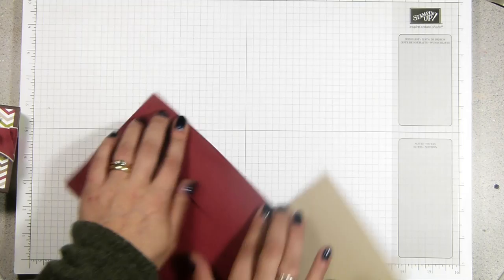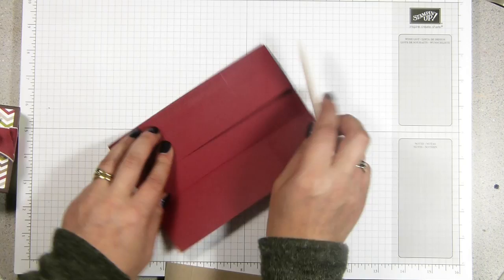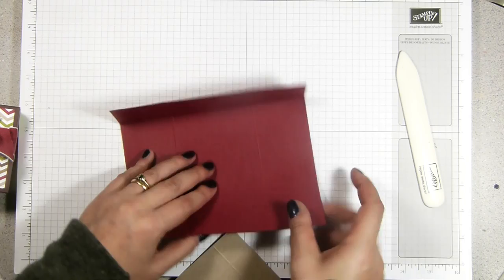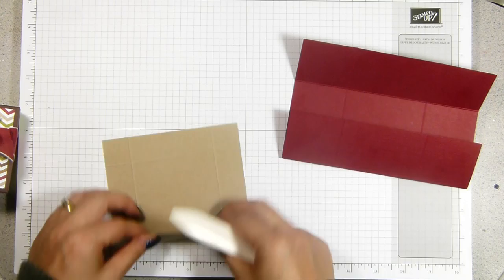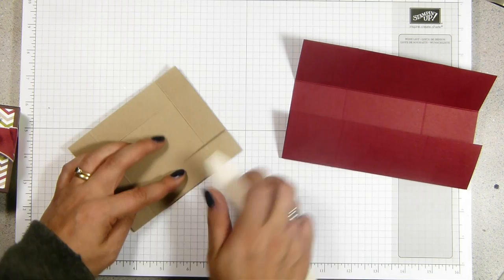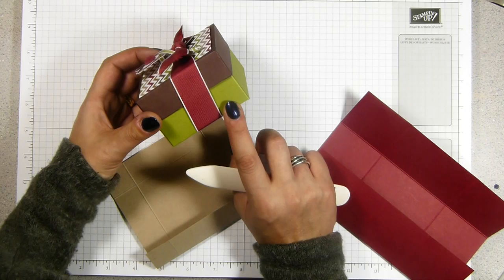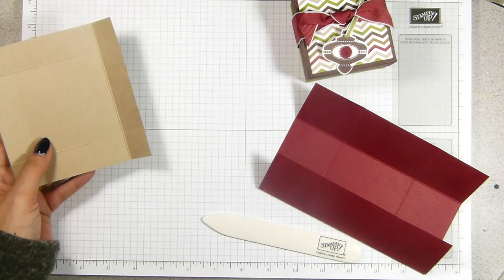I'm going to fold all my score lines, but I'm not going to build the box just yet. So fold all the score lines. Burnish these well. And the same on this one. This one's the cherry cobbler textured cardstock. This is crumb cake. And the original one I made, which is the Old Olive textured cardstock and chocolate chip at the top.